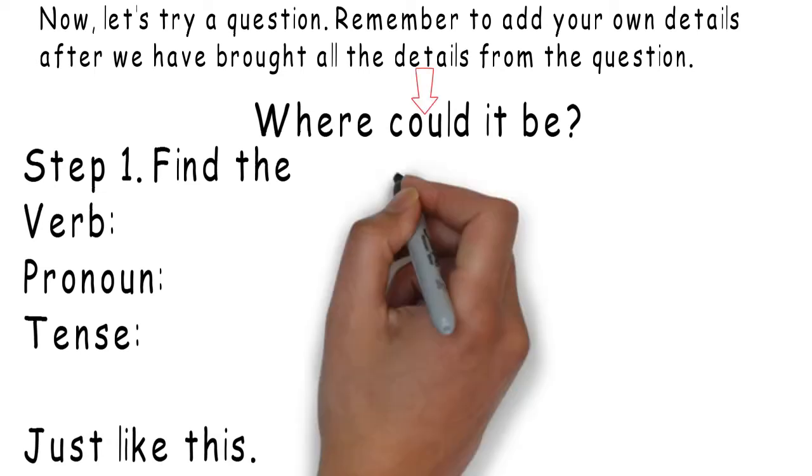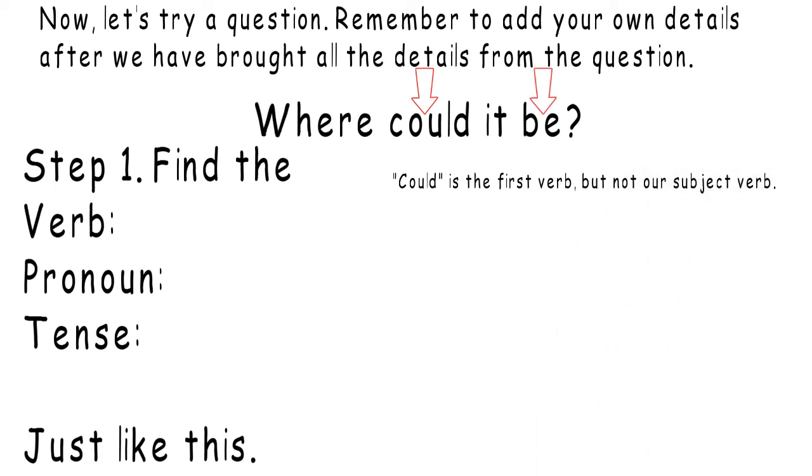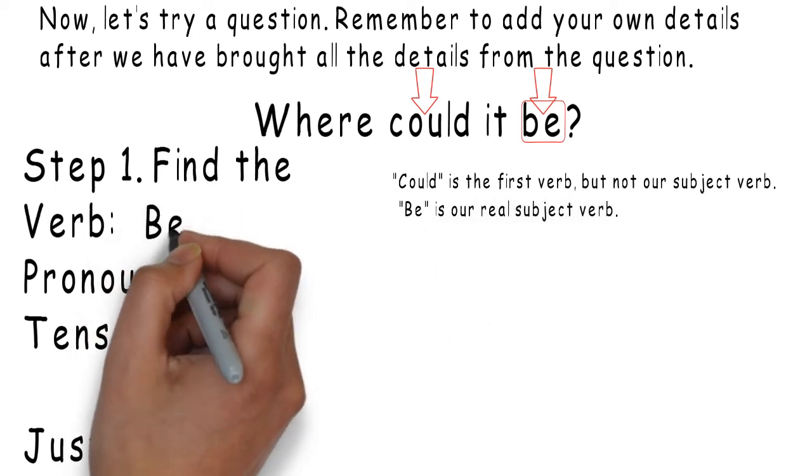Could. Could is the first verb, but it is not our subject verb. Be. Be is our real subject verb, so our verb is be.